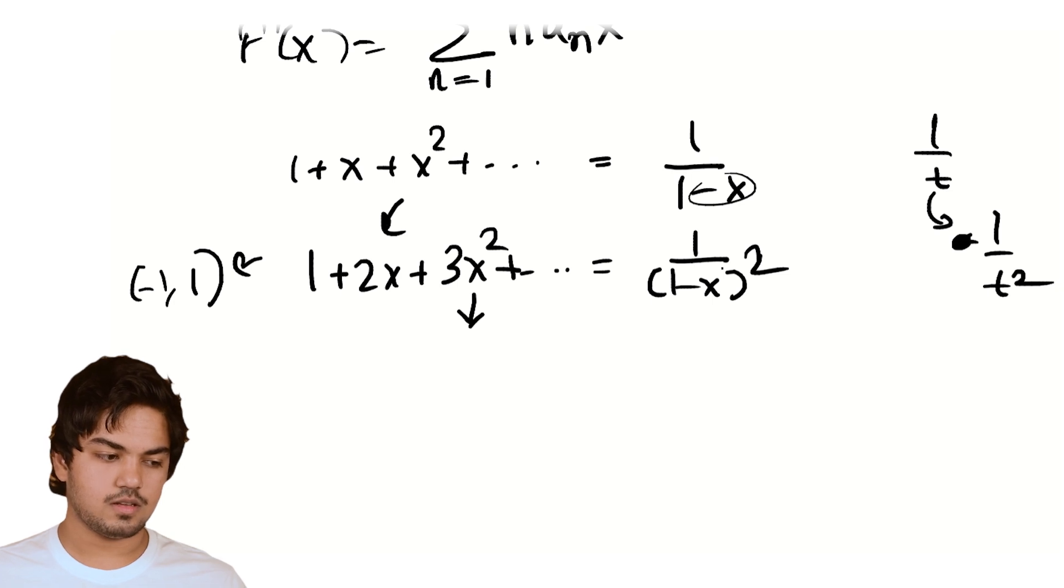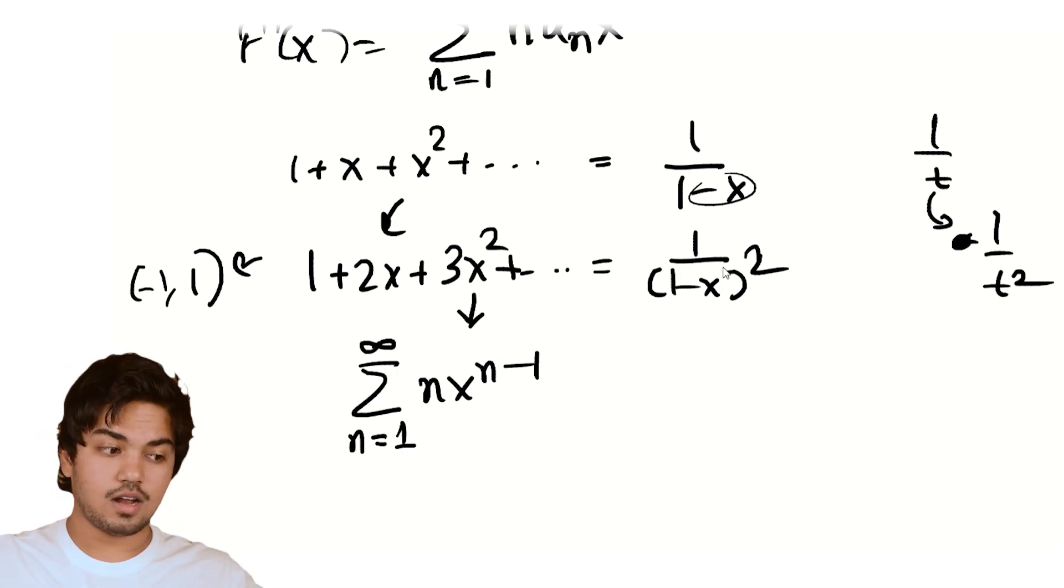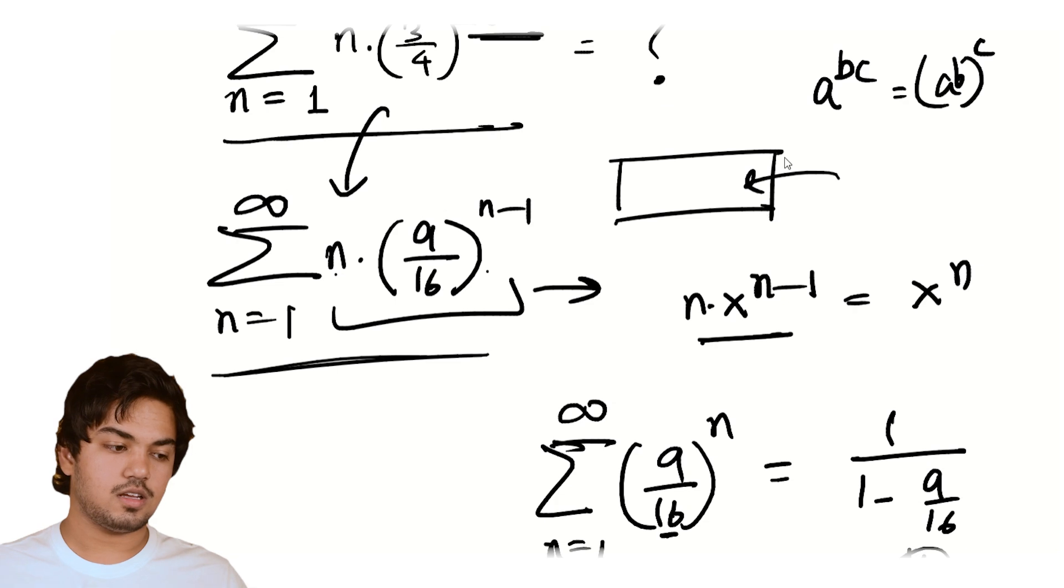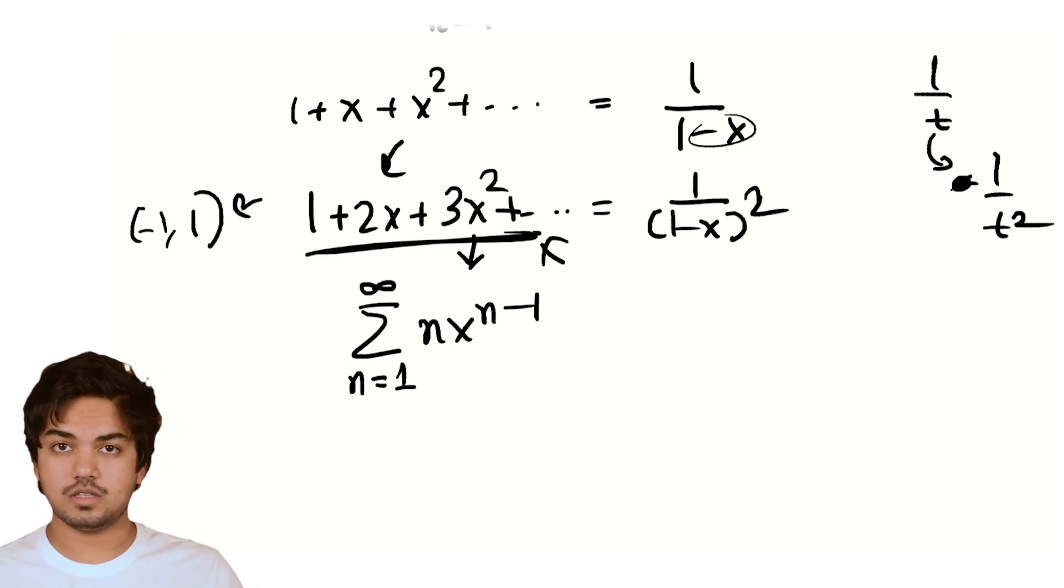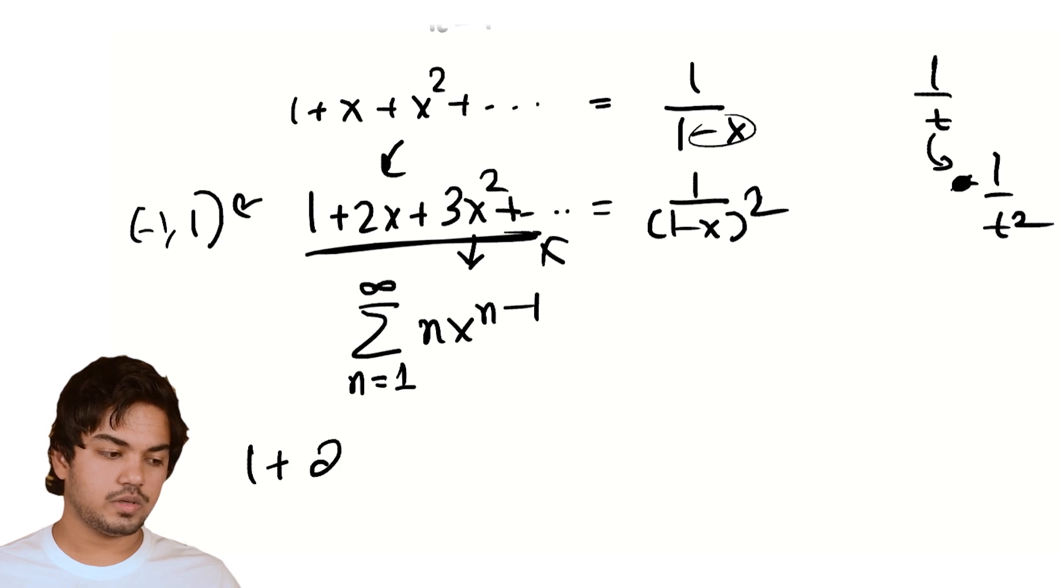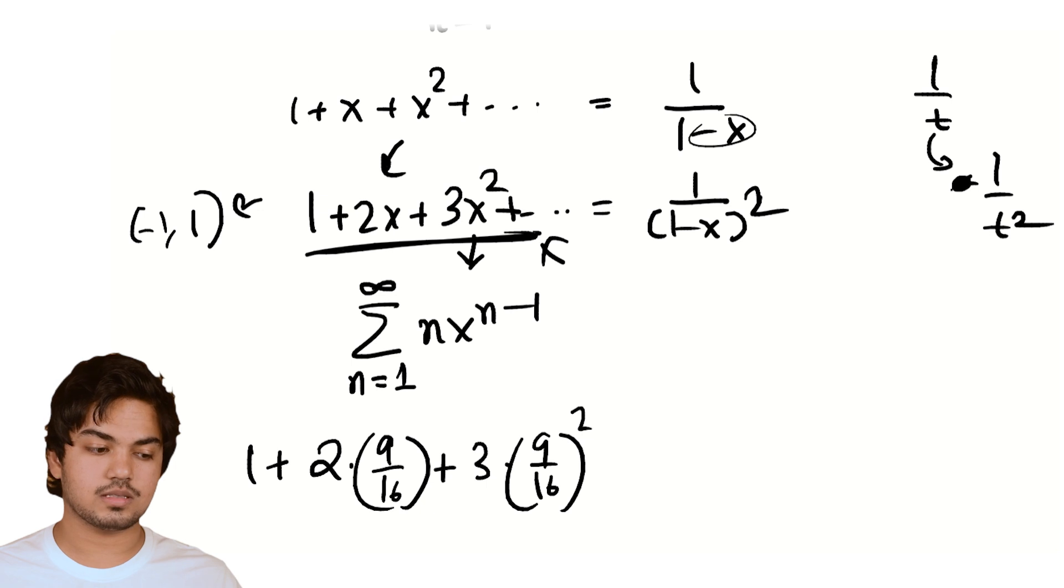Look at this, right? Our answer is just what would happen if you plugged in 9/16 into both sides of the equation. So 1 plus 2 into 9/16 plus 3 into (9/16) square, which is what our expression is, is equal to 1/(1 - 9/16) square, which is equal to 16 square by 7 square.